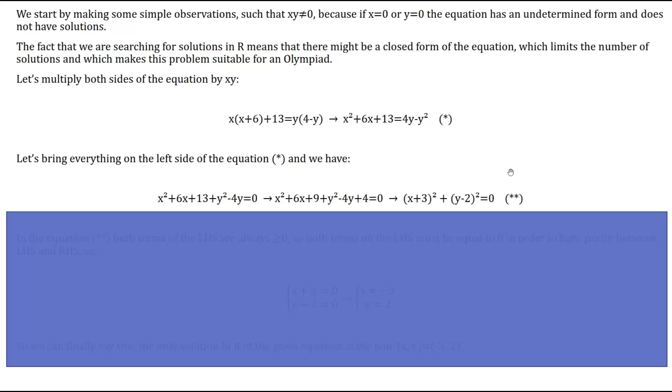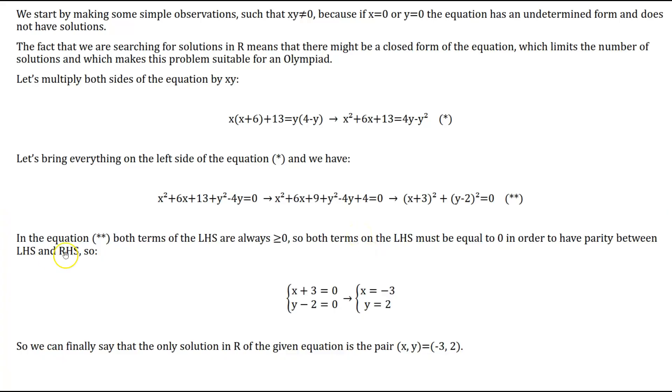After we've come to this form, now it's much easier to do our reasoning for the final solution. In equation number two, both terms of the left-hand side, these full squares, are always greater than or equal to 0. So in order to have parity between the left-hand side and the right-hand side, both these factors must be equal to 0.